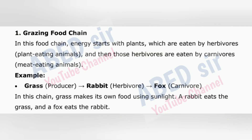1. Grazing Food Chain: In this food chain, energy starts with plants, which are eaten by herbivores, plant-eating animals, and then those herbivores are eaten by carnivores, meat-eating animals. Example: Grass (producer) → Rabbit (herbivore) → Fox (carnivore). In this chain, grass makes its own food using sunlight, a rabbit eats the grass, and a fox eats the rabbit.